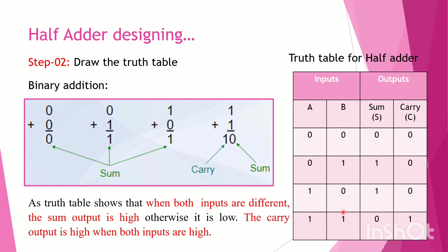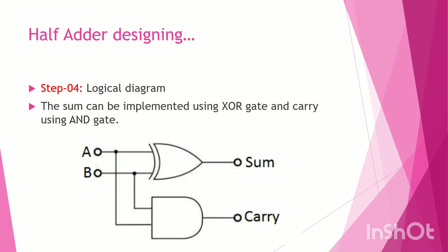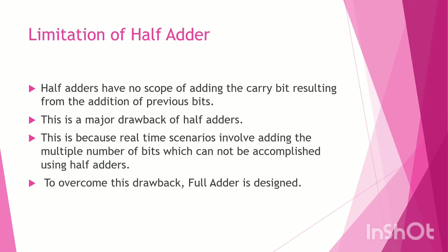The carry is high when both inputs are high; the remaining cases give 0. From the K-map, the carry equals A AND B. The sum can be implemented using an XOR gate, and the carry uses an AND gate.